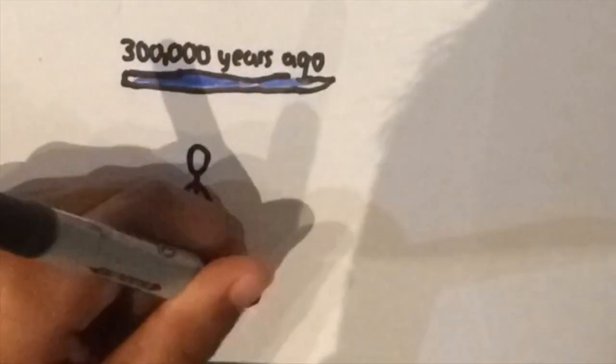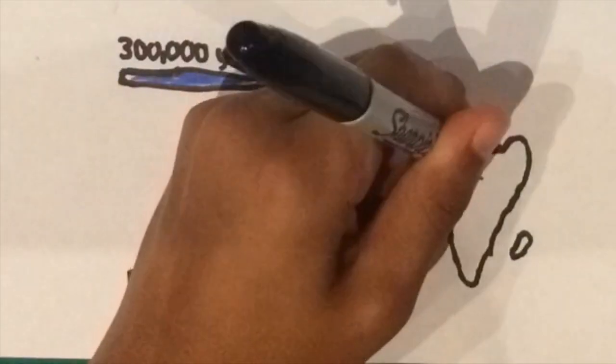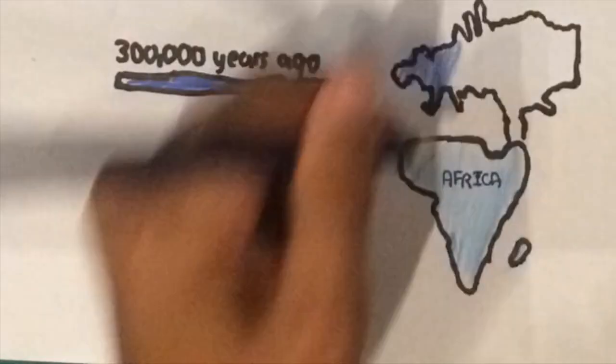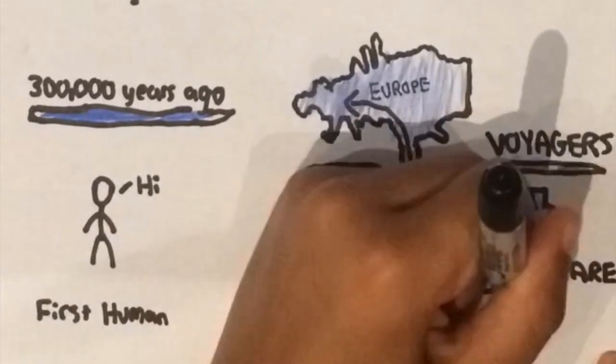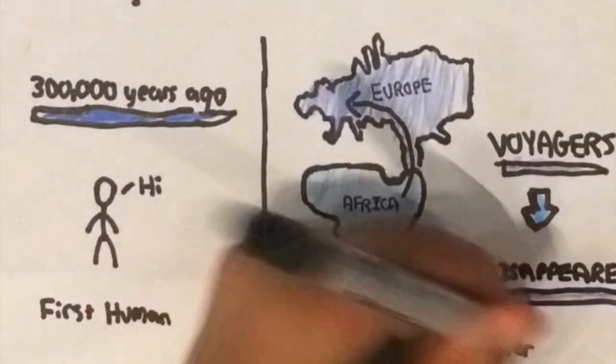After evolving 300,000 years ago, our ancient ancestors that originated in Africa ventured out to the other continents 30,000 years into their history. However, these first Homo sapiens that went to colonize the distant lands suddenly disappeared once they reached Europe,